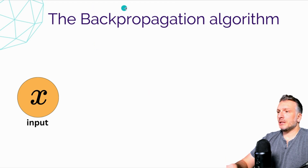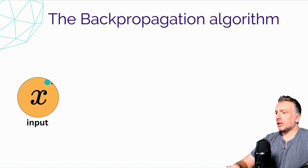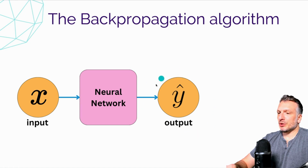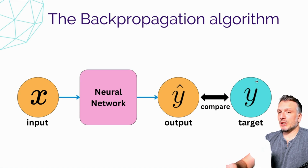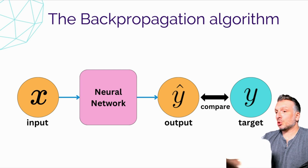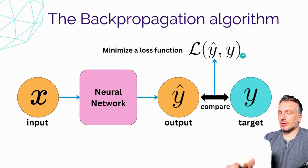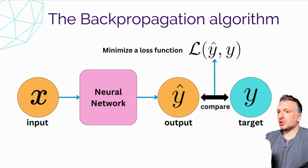Let's consider an input x. If we pass this input through a neural network, we get an output — a prediction of the target we're trying to learn. We're training the neural network to produce predictions that are close to the target. To tell the model how to update its weights, we compare the predictions and the targets and create a loss function. The loss function captures how far away the predictions are from the target, and we want to minimize it.